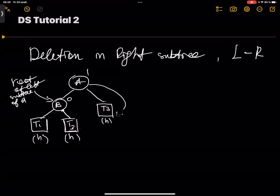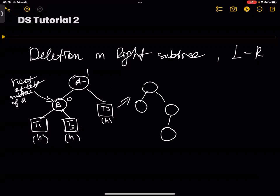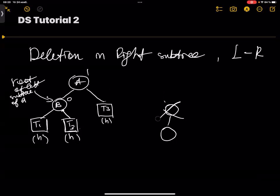When we delete something from the right subtree T3, the height of T3 becomes h-1. We don't care which specific node we're deleting. What we do first is look at the root of the left subtree. So the rule is: when you delete a node in the right subtree, you go and look at the balancing factor of the root of the opposite (left) subtree, which is B.